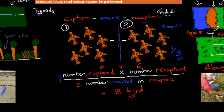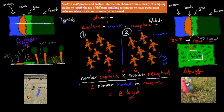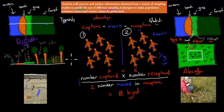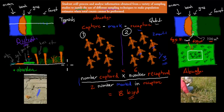That's how we use capture-mark-recapture to get abundance. So we have transects for distribution and quadrants or capture-mark-recapture for abundance. Now, the objective asks us to justify why we need different ones. With a transect, we can find out what kinds of things are in each area — grassland, forest, beach — but it's not good for abundance because it's just one line, not an area.